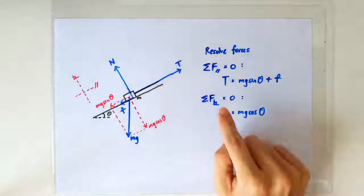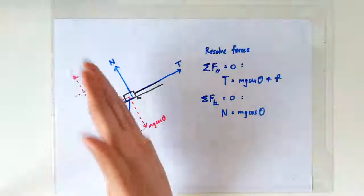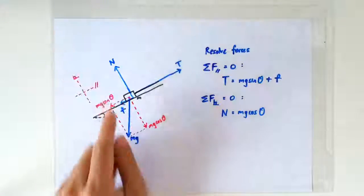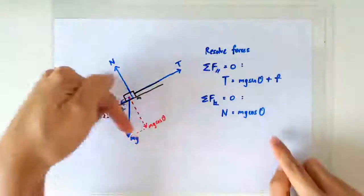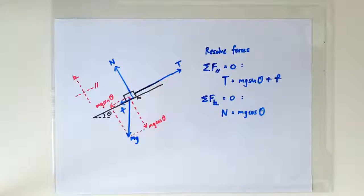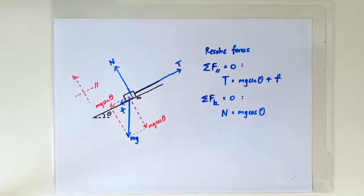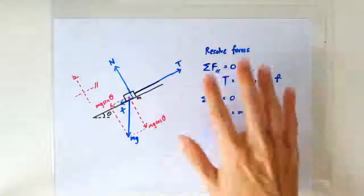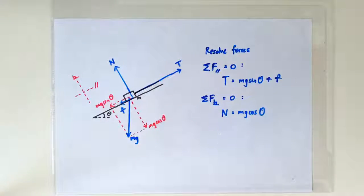Likewise, the net force in the direction perpendicular to the slope should also be zero. So along this direction, what we have is the normal contact force, balancing the mg cosθ. So the underlying principle is of course net force is zero, but to make our calculations easier, we resolve everything into two directions, one parallel and one perpendicular to the slope, and that's how we solve such problems.